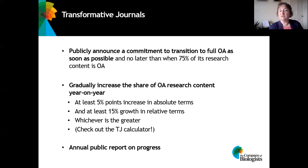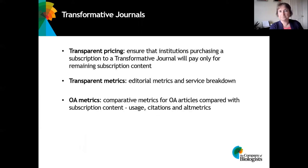You also need to produce an annual public report on your progress so that Plan S and other parties can see how well you're transitioning towards open access. There's a great deal of transparency behind a transformative journal — for example, transparent pricing so that institutions purchasing a subscription to a transformative journal know that they're only paying for the remaining subscription content and avoiding any perception of so-called double dipping.